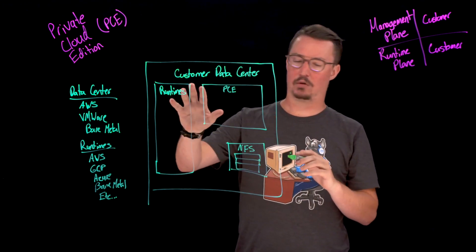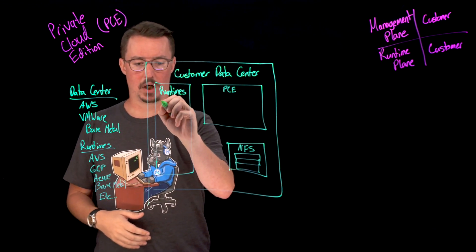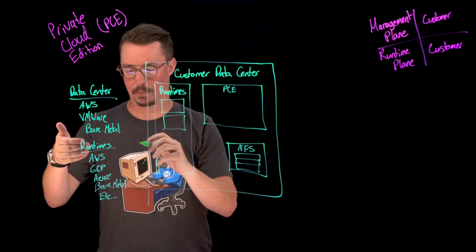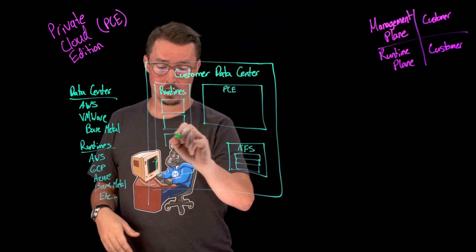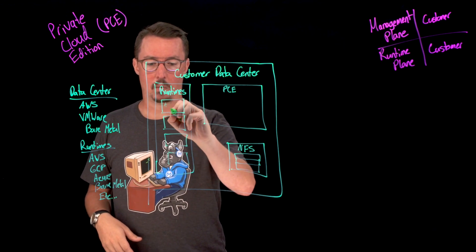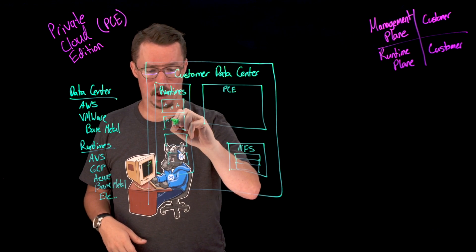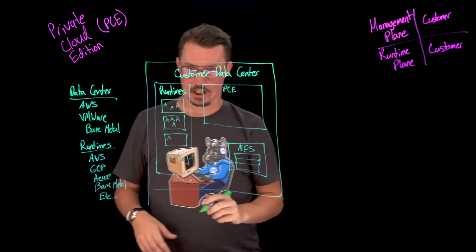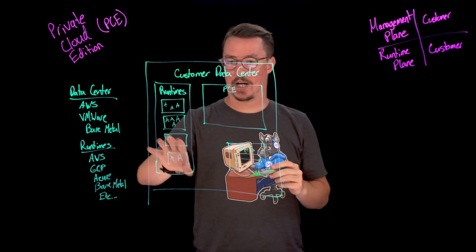Let's start by looking at our runtimes and what that's going to look like. We're going to have a multitude of different servers that can be deployed in any one of these — AWS, GCP, Azure, anything like that. We're going to have a bunch of different servers, and all these different servers will have any number of applications on them — it could have one, two, three, however many we want to put on these servers. They can be different sizes, all different things. Essentially, all of these are going to be managed by our PCE.